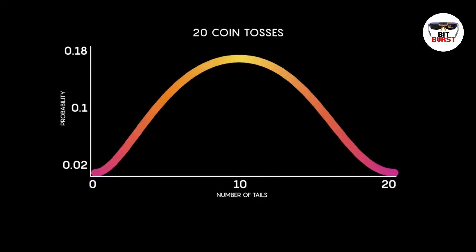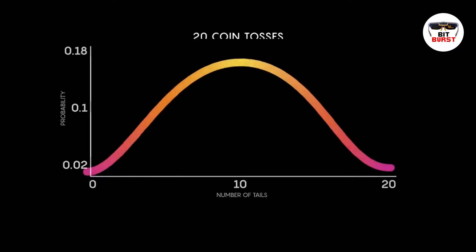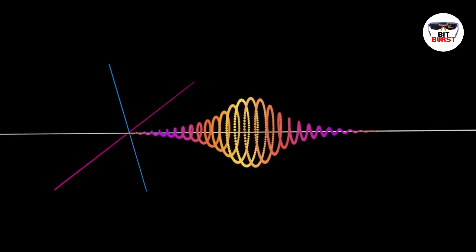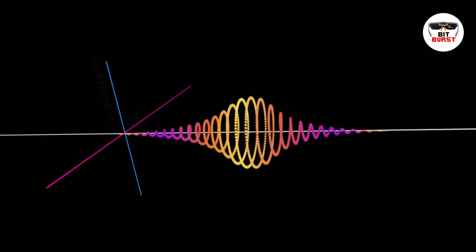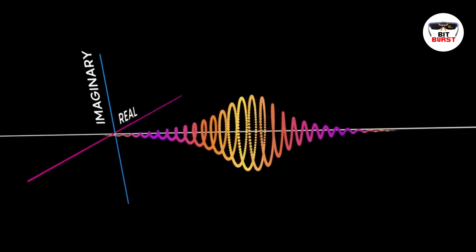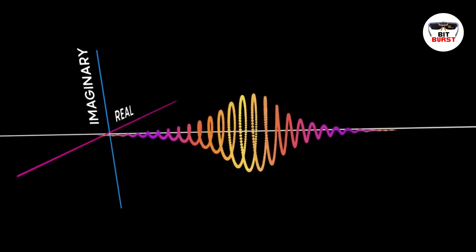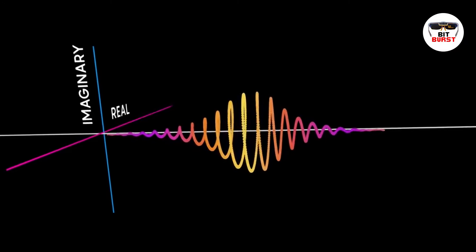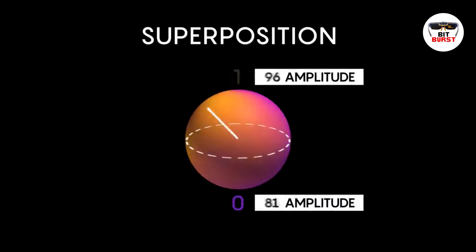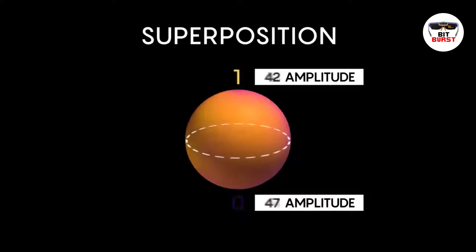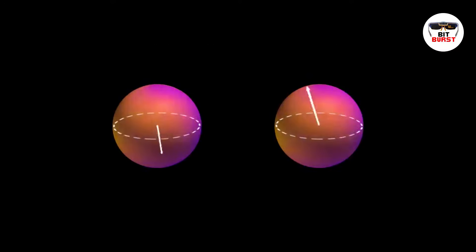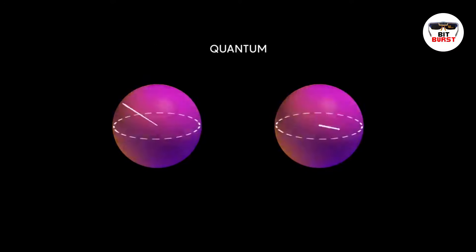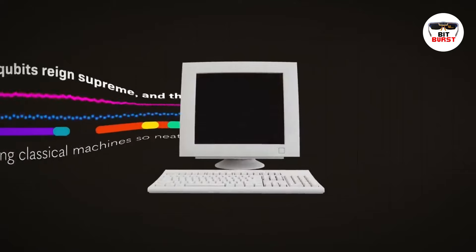Quantum computers, unlike their classical counterparts, leverage quantum mechanics to process data. They use quantum bits, or qubits, instead of binary bits. A qubit, thanks to superposition, can be zero, one, or both simultaneously, enabling quantum computers to handle vast computations concurrently.